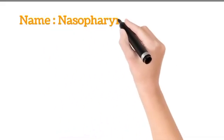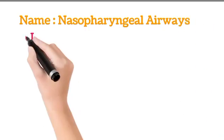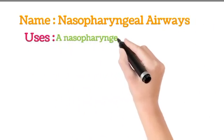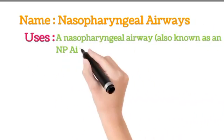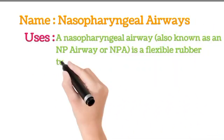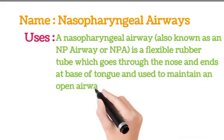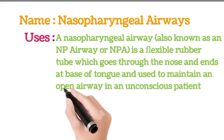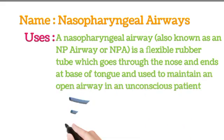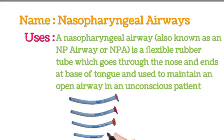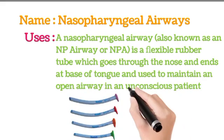Name: Nasopharyngeal airway. Uses: A nasopharyngeal airway, also known as an NP airway or NPA, is a flexible rubber tube which goes through the nose and ends at the base of the tongue. It is used to maintain an open airway in an unconscious patient.